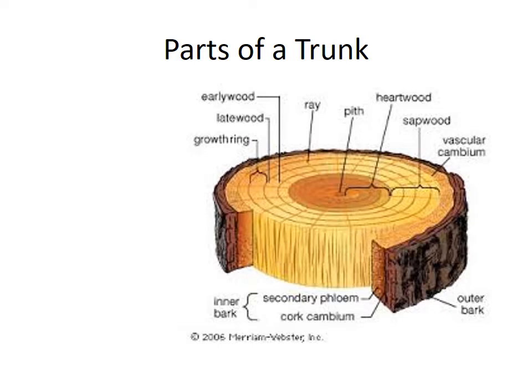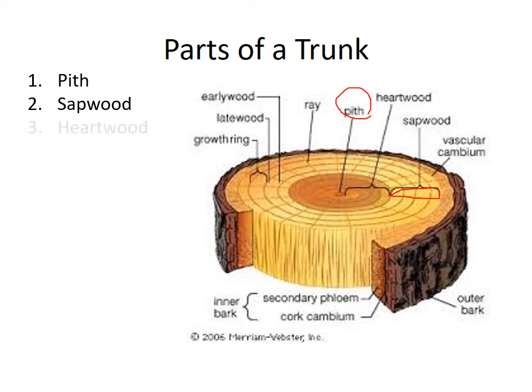Now let's talk about the parts of a trunk. The pith is the center — the core of the tree where it all begins. The sapwood is lighter in color, especially in cherry, walnut, and maple, which all have lighter color in the outer trunk. The heartwood is dark. Cherry is known for its dark, deep red, and that's the heartwood of the tree. The sapwood is light and usually undesirable, but it looks pretty too.